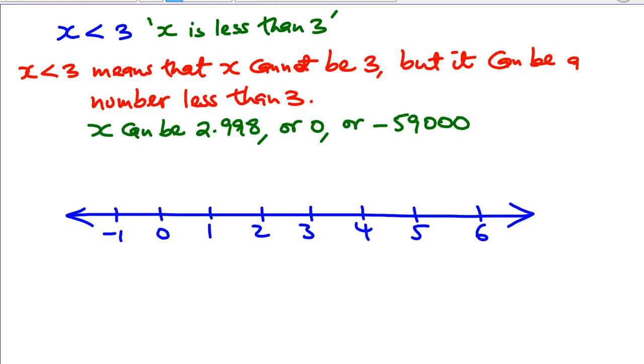Remember what we said is that X cannot be 3, which means when we represent this on a number line, we'll draw an open dot, basically a circle that's not shaded, because X cannot be 3. But X can be any number less than 3. So we can represent this using an arrow going to the left. Any number that's less than 3 satisfies this condition.